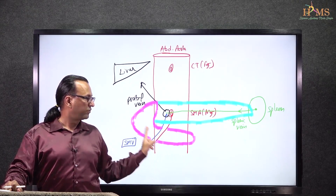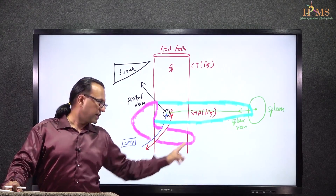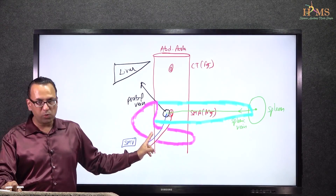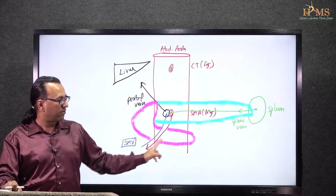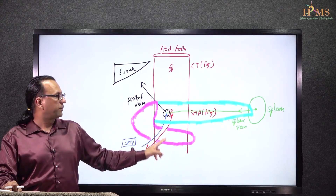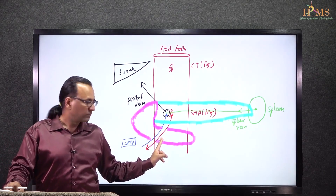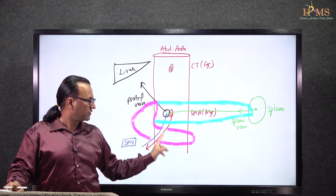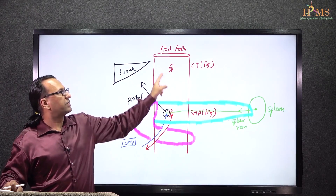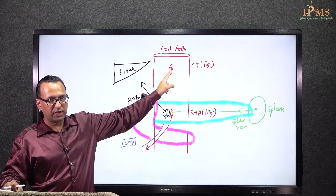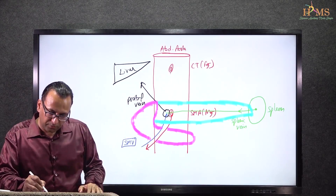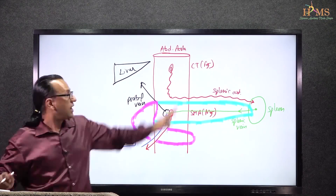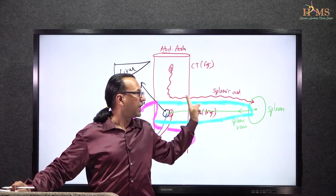The clinical relevance is this: when there is an uncinate process tumor, it compresses the superior mesenteric vessels, giving us the answer. It will not compress the splenic artery because the splenic artery is not in this region — it is a branch of the celiac trunk running on the superior border of the pancreas and reaching the hilum of the spleen.